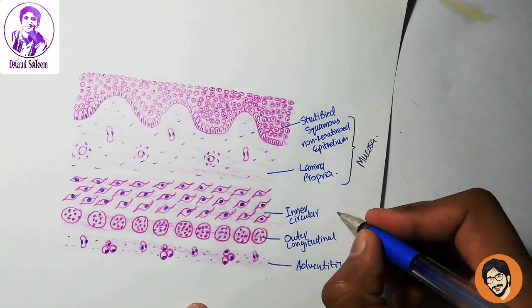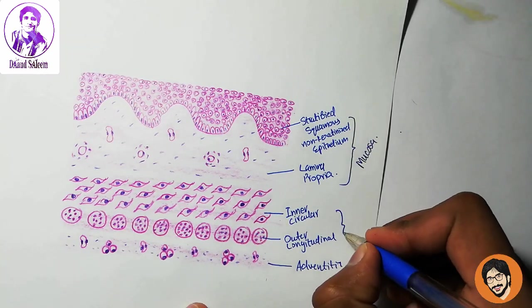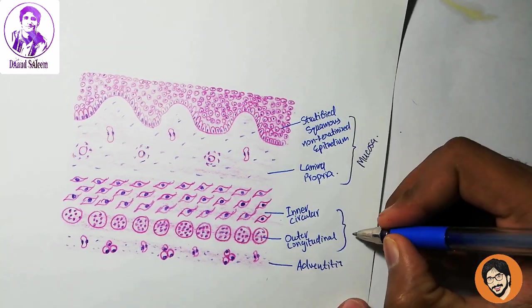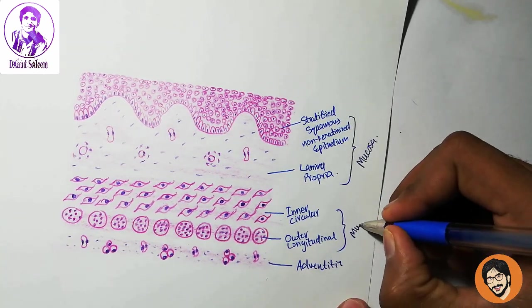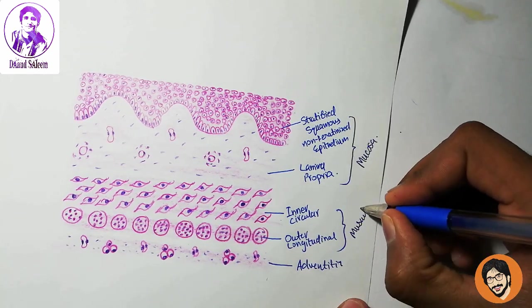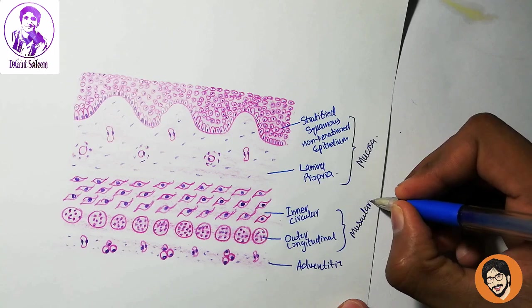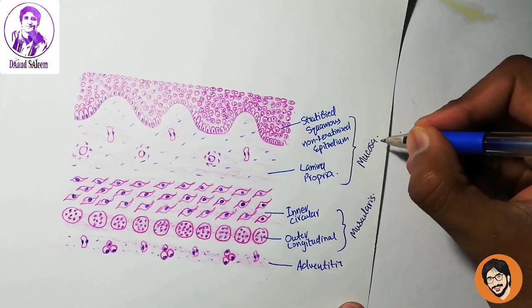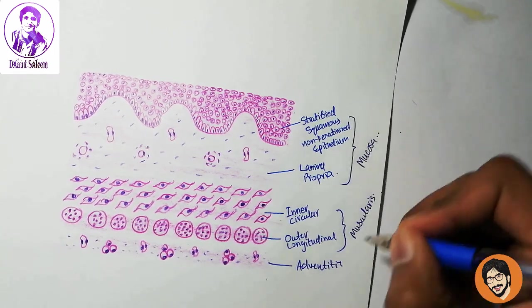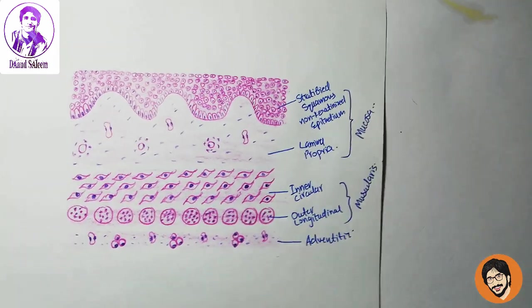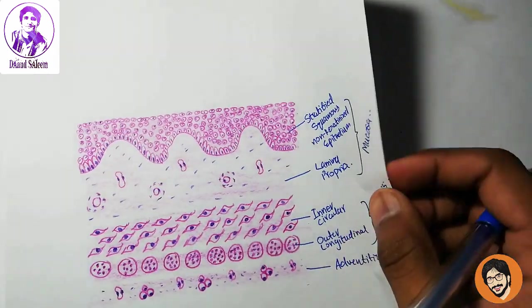So this is the three-layer structure of the vagina: mucosa, muscularis, and adventitia.